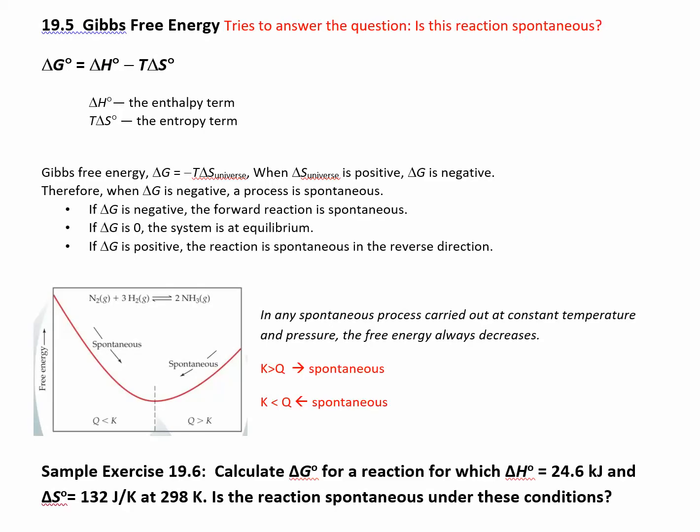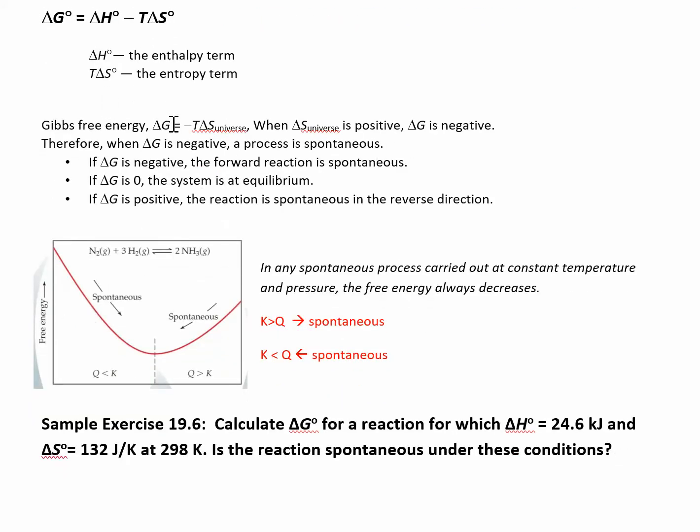So now we can look at Gibbs free energy. We're really trying to answer the question, is this reaction going to be spontaneous? And you can tell that just by looking at the sign of delta G. Delta G has two main components: you have an enthalpy term and you have an entropy term. Because of what we define delta G based on what's happening with the entropy of the universe, we can just look at the sign of delta G to tell whether that reaction is spontaneous or not.